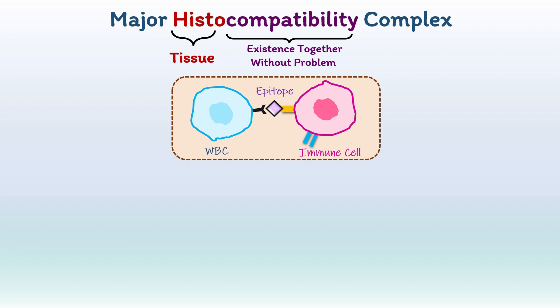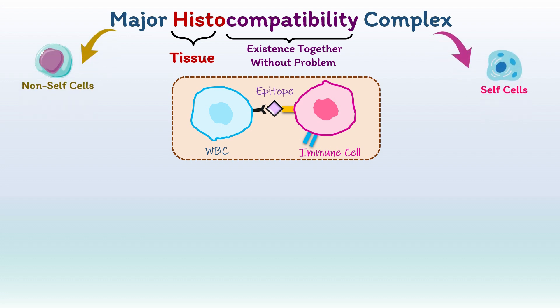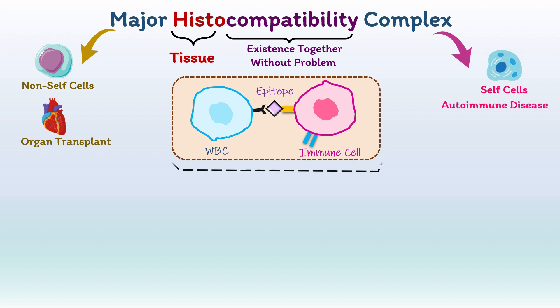Epitope is a molecular fraction of the protein which is displayed by the Major Histocompatibility Complex. This epitope is part of the antigen or foreign body that is recognized by the immune system. Remember that we talked about the self and non-self cells — these self and non-self cells are the epitope. In simple words, MHC helps to recognize the difference between self and non-self cells, such as in organ transplant and autoimmune disease, which will be explained later in this video.